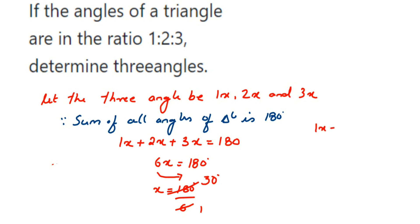And the second angle is 2x, so 2x means 2 into 30 which is 60 degrees. And the third angle 3x is equal to 3 into 30 which is equal to 90 degrees.